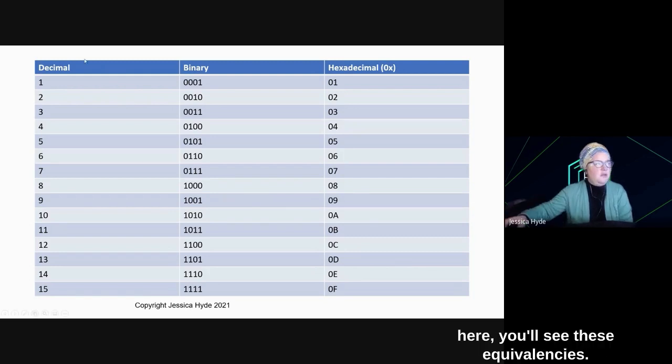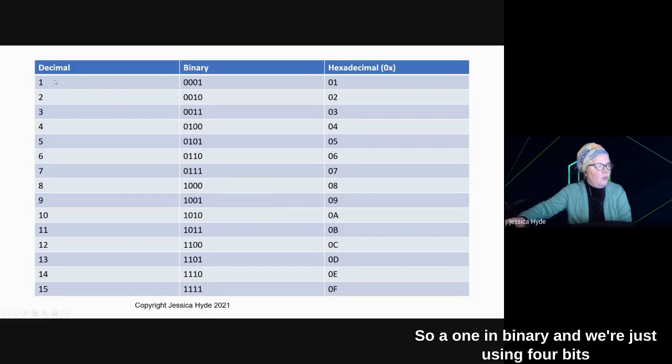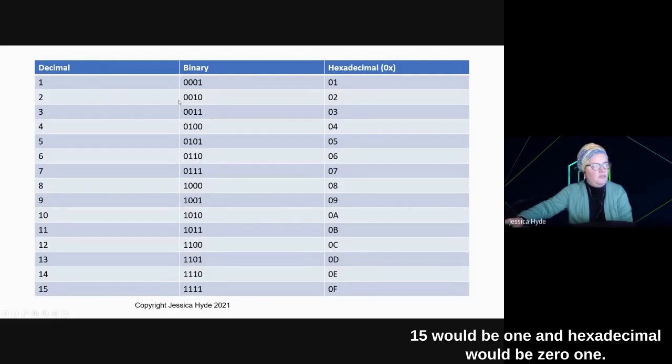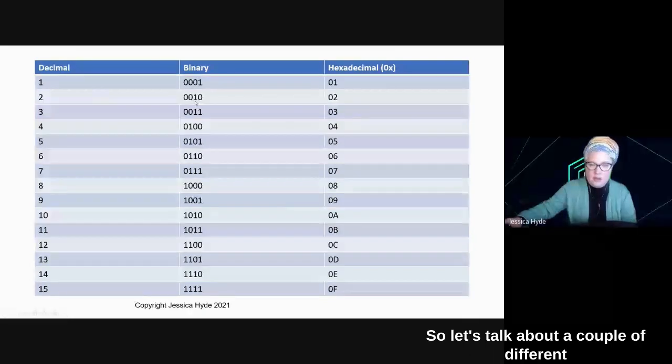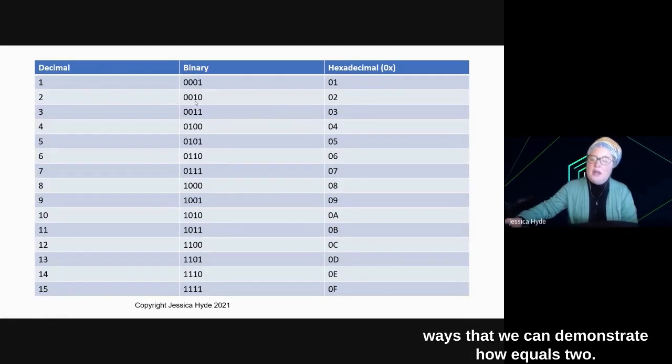If you look at our chart here, you'll see these equivalencies. So a 1 in binary, and we're just using 4 bits here because that's the most we need to get to 15, would be 0, 0, 0, 1, and hexadecimal would be 0, 1. A decimal 2 would only be a 1 in the 2's place.